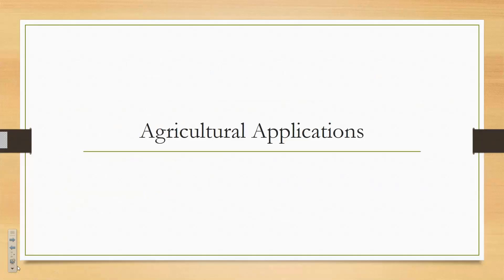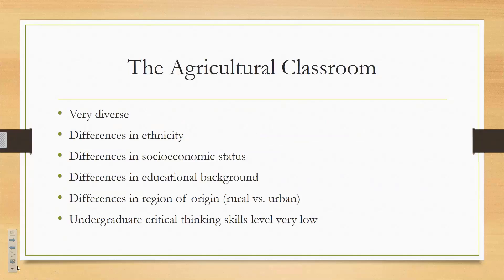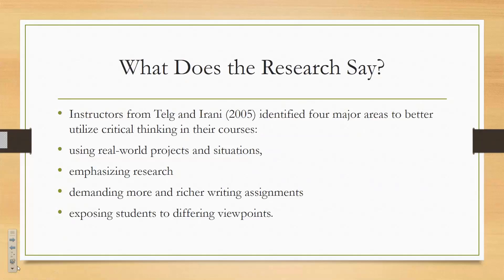Now I want to talk about the agricultural classroom. At least at A&M, agricultural classrooms are quite diverse — all kinds of people with different ethnicities, socioeconomic statuses, educational backgrounds, religions, and regions of origin, whether from the city or the country. Of course, undergraduate critical thinking skills are usually very low, mainly because we don't teach these skills in many high school classrooms. We're working on that, but it's something we haven't quite gotten to yet.